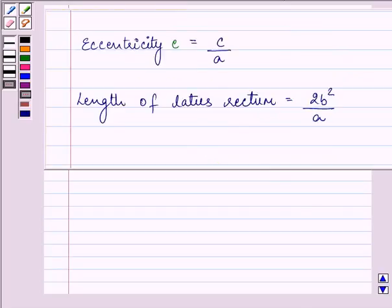Also, the eccentricity that is e is equal to c by a whereas we can find the length of the latus rectum is equal to 2b square by a.